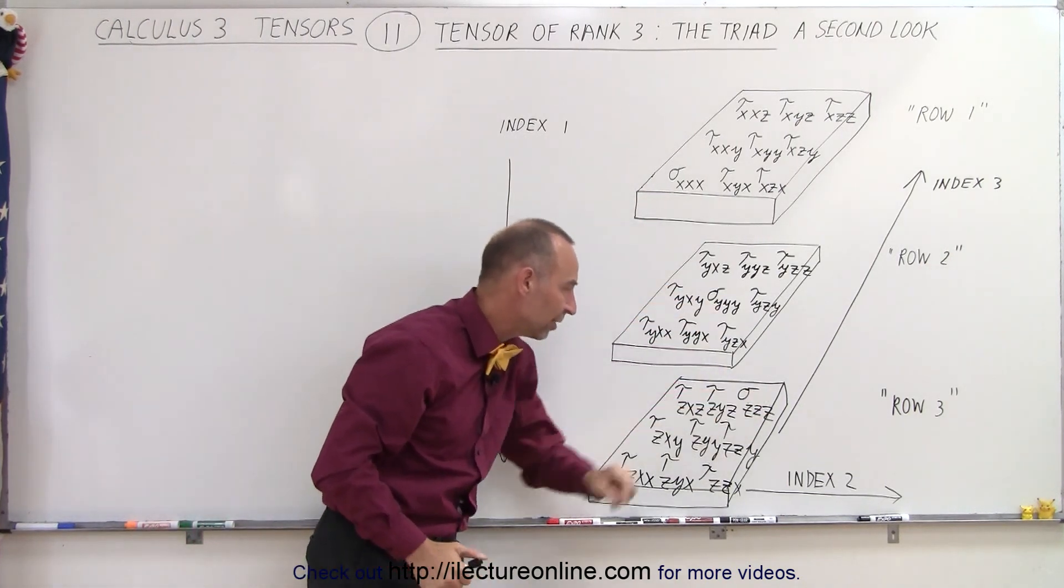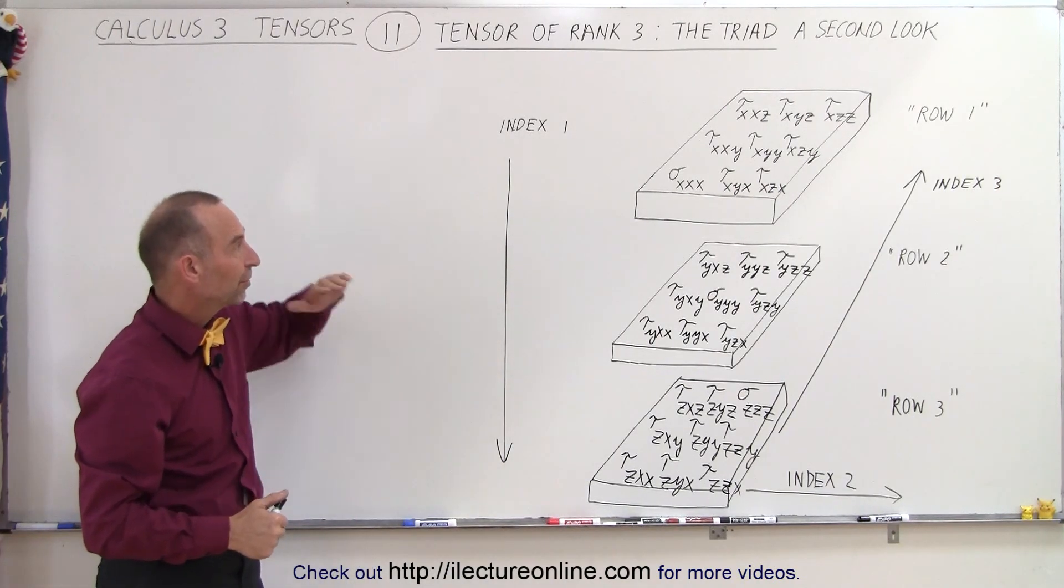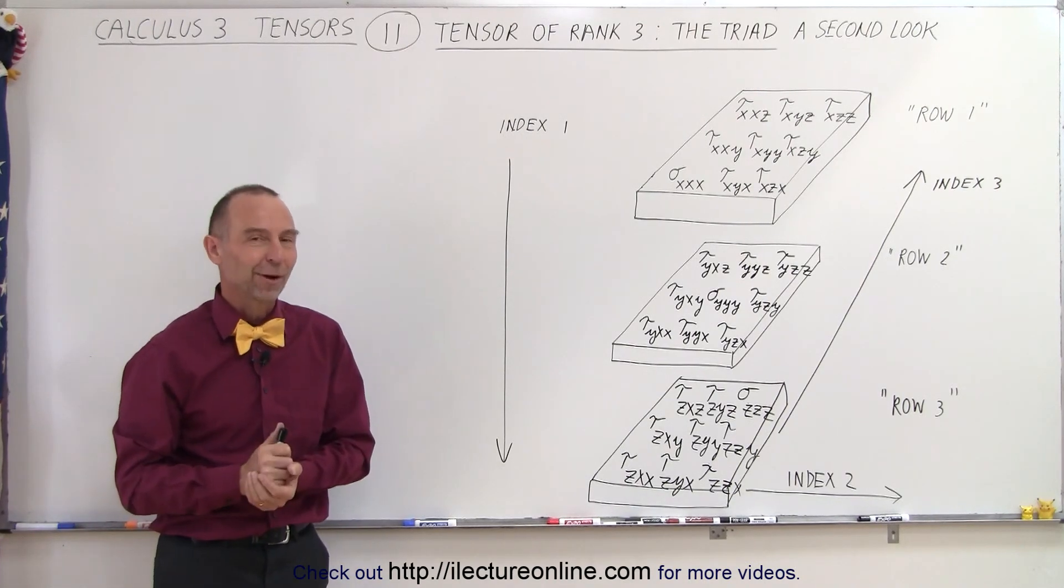Three x's, three y's, three z's, and that's how you fill in the indices on any one of these levels, representing the different slices of the cube from top to bottom, and that's another look at a triad.